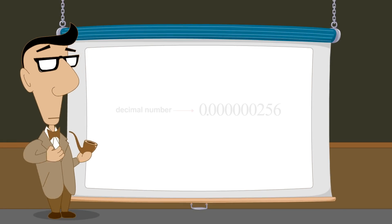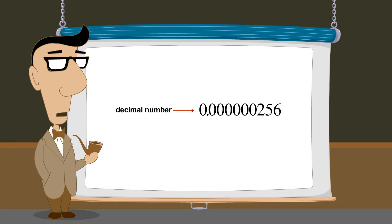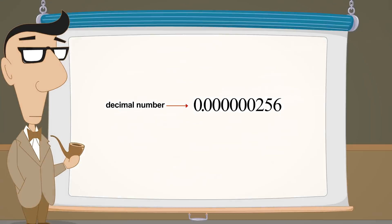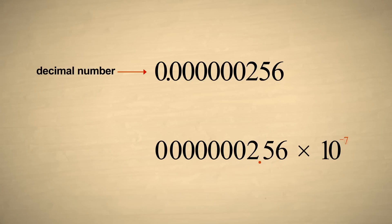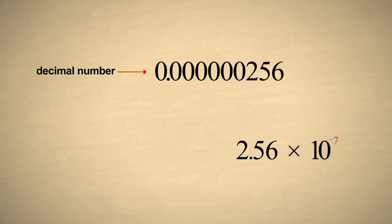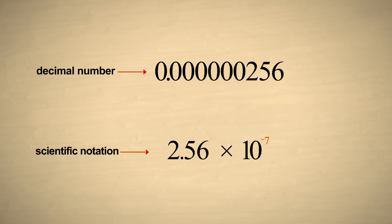For our final example, let's convert a very small decimal number to scientific notation. We add a multiplier of ten to the zero power. To reposition the decimal point after the first non-zero digit, we will need to move it seven columns to the right. Therefore, we must decrease the exponent of the multiplier by seven. The number is now written in scientific notation.